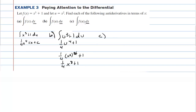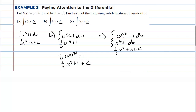In letter c, we're integrating f of u but with respect to x, so f of u is actually the integral of x squared to the third plus 1 dx. So we're going to integrate x to the sixth plus 1, giving us 1 seventh x to the seventh plus x plus c — and we need the plus c here because it's an indefinite integral.